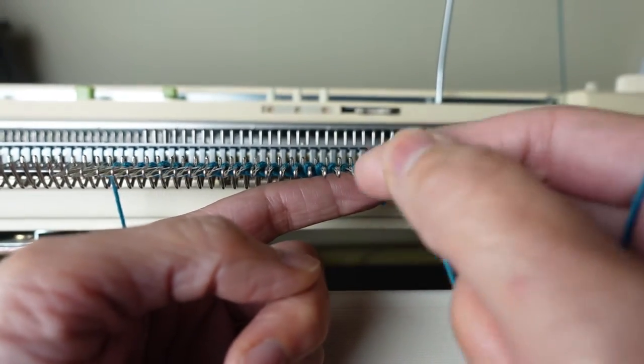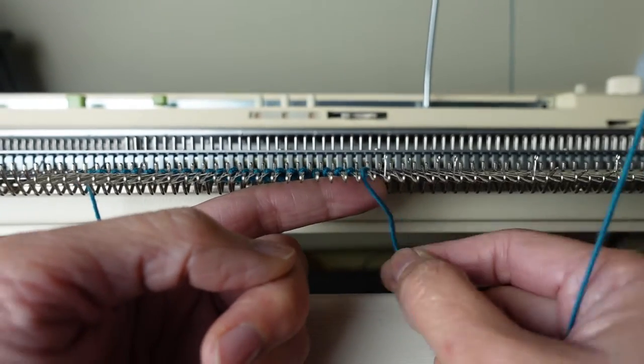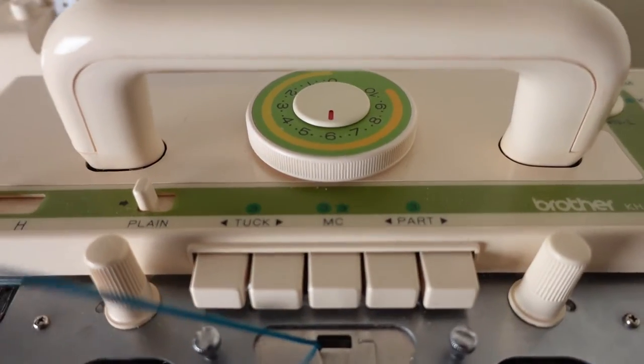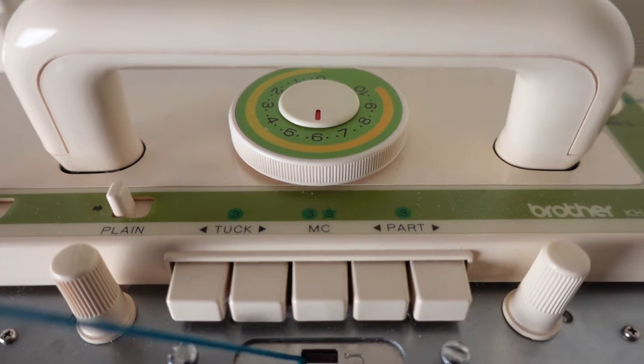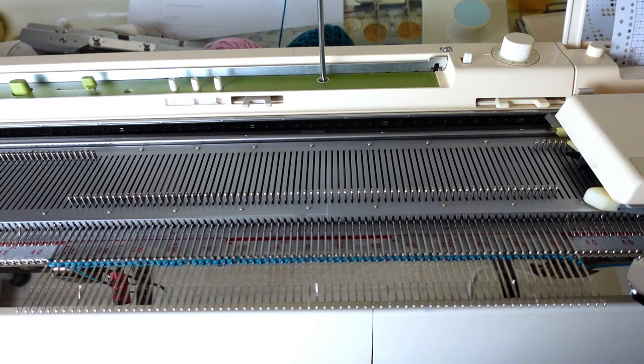And set your main tension. My yarn is more like a sport weight. So I use tension six. After hanging the weight, we can start knitting a few rows of the plain stockinette stitches.